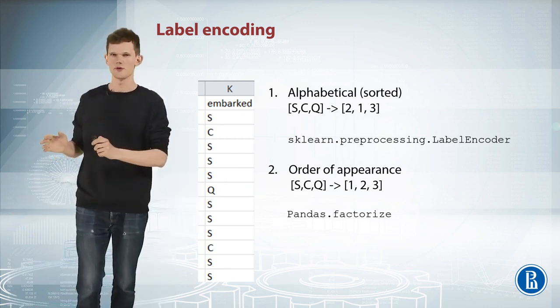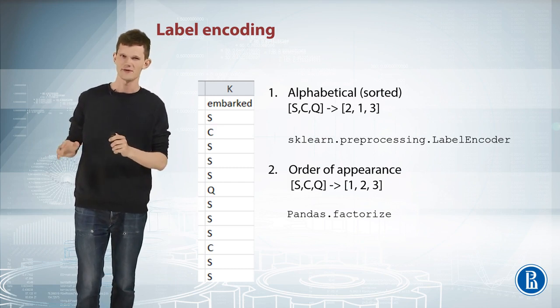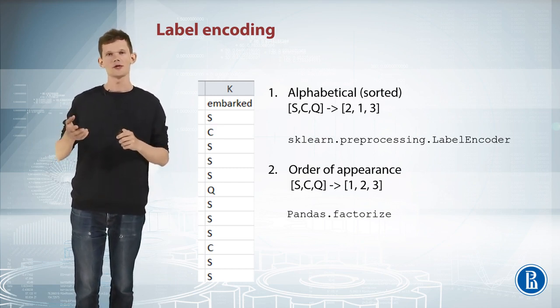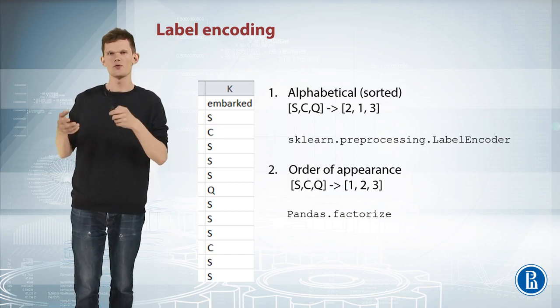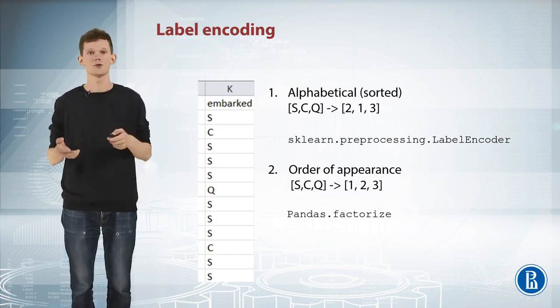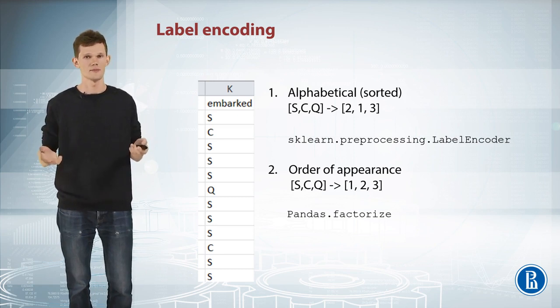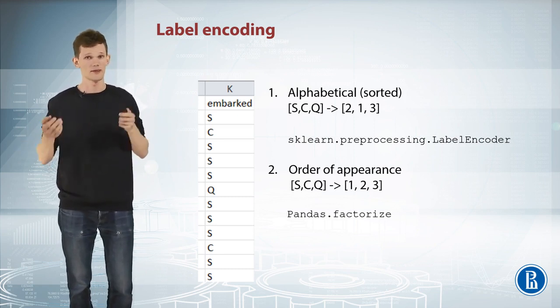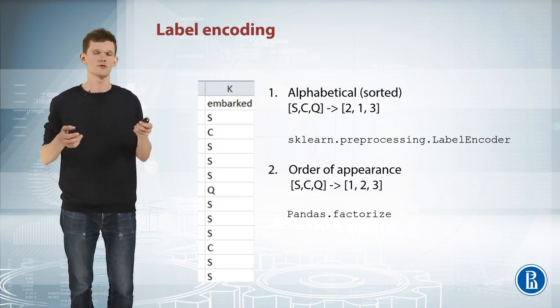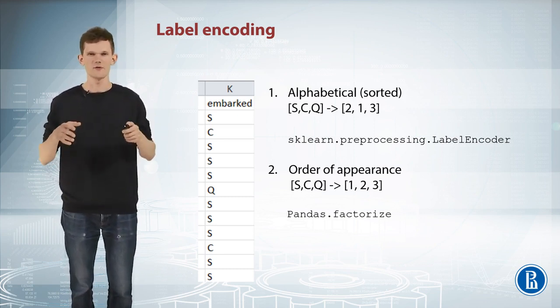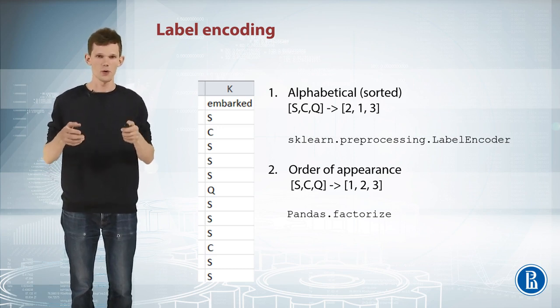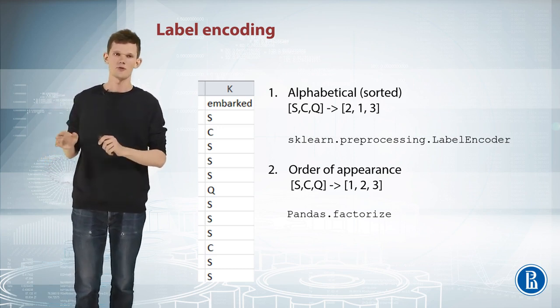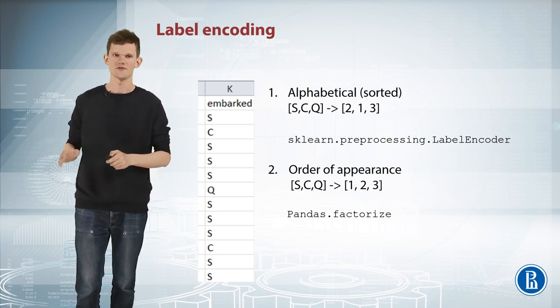The second way is also label encoding, but slightly different. Here we encode a categorical feature by order of appearance. For example, S will change to 1 because it was met first in the data. Second is C, and we will change C to 2. And the last is Q, which will be changed to 3. This can make sense if rows were sorted in some meaningful way. This is the default behavior of Pandas Factorize function.